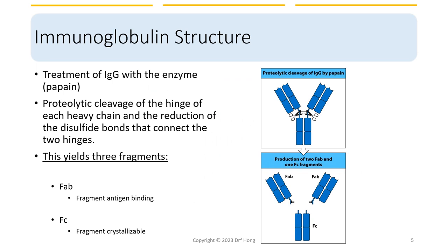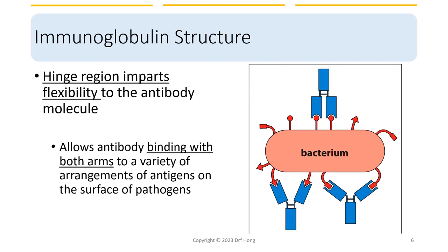Now let's look at the antibody structure more closely. When we treat antibodies with an enzyme called pepsin, the enzyme can digest the hinge of each heavy chain and reduce the disulfide bonds that connect the two hinges. This produces three fragments: two Fab fragments that can bind to the antigen, and an Fc fragment that can be crystallized in the experiment. Another notable feature of the hinge region is that it is flexible, which allows the antibody to bind with both arms to many different arrangements of antigens on the surface of pathogens.